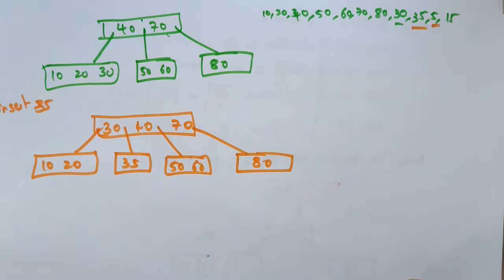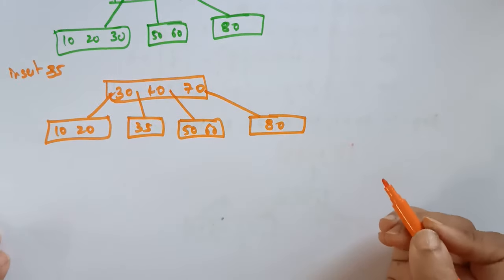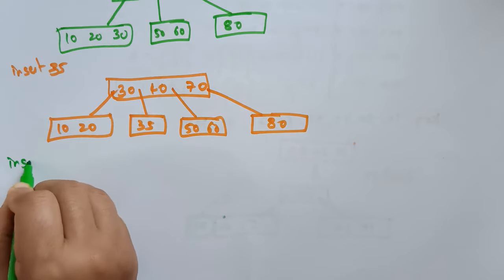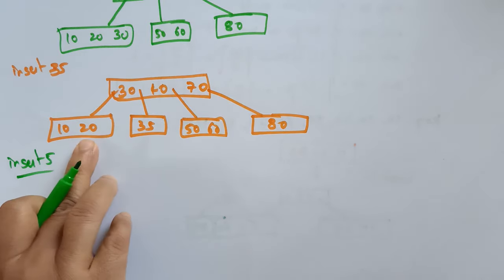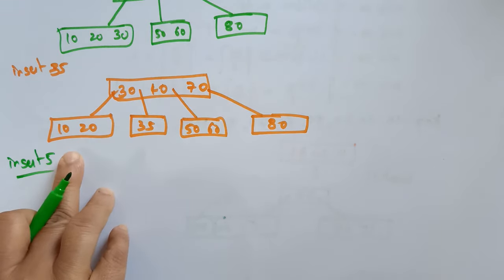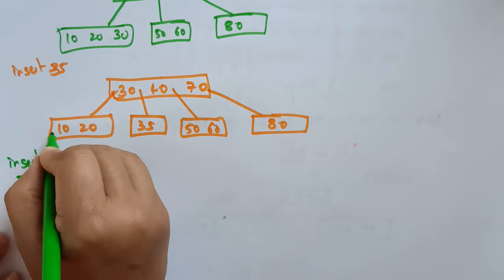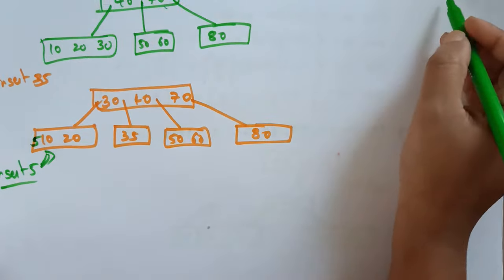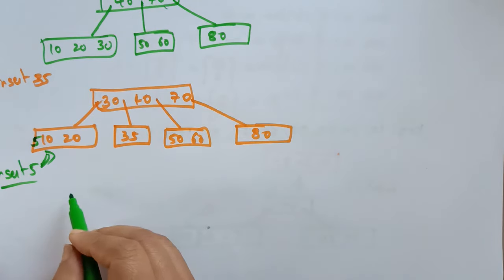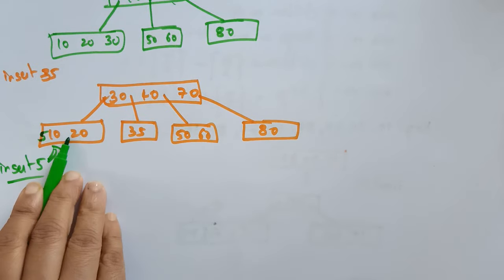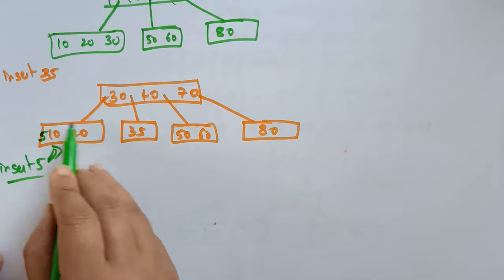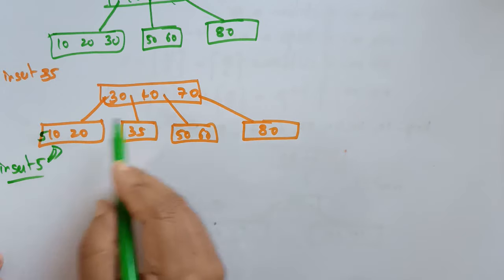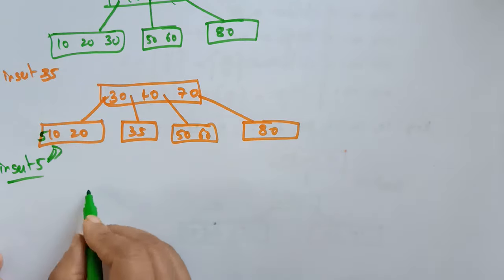Next, I want to insert 5. The 5 should be placed on the leftmost node — I can simply place it there. Now I want to insert 15. I need to insert 15 here, but my node is already filled with three key values.